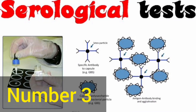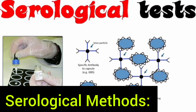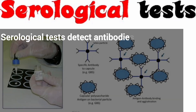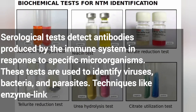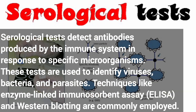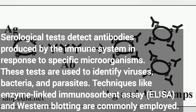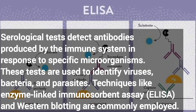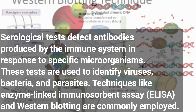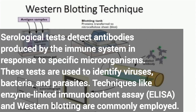Number 3: Serological Methods. Serological tests detect antibodies produced by the immune system in response to specific microorganisms. These tests are used to identify viruses, bacteria, and parasites. Techniques like enzyme-linked immunosorbent assay (ELISA) and western blotting are commonly employed.